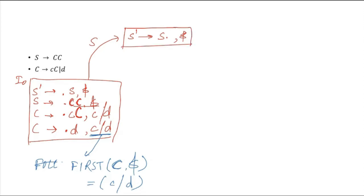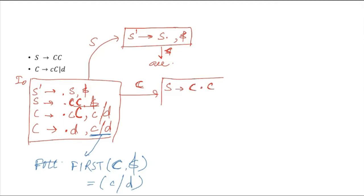Close this item set I0 — dollar leads to exit. Then capital C is coming after a dot, so we will get S to capital C dot, another capital C, with lookahead comma dollar dollar.